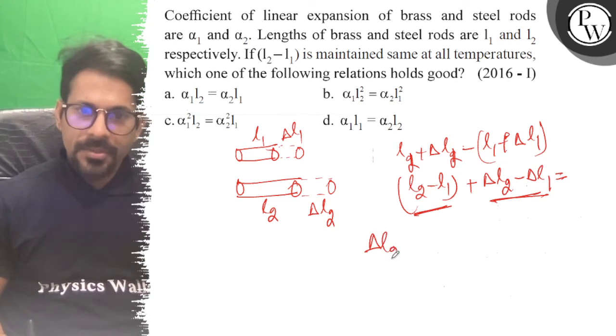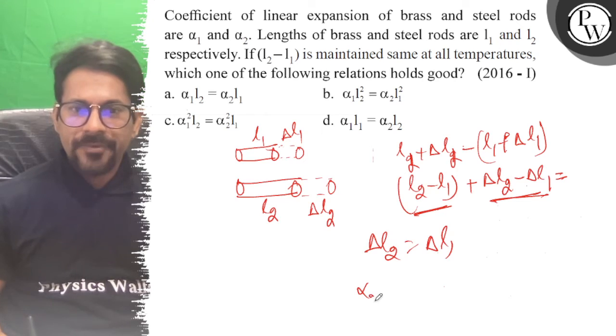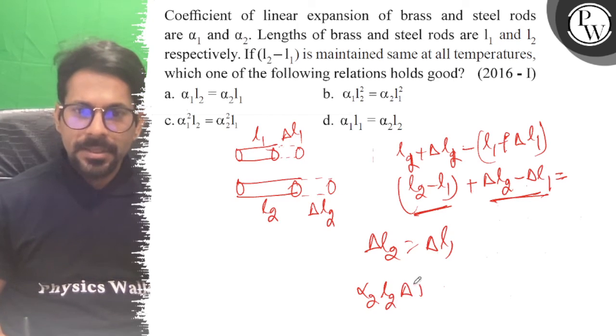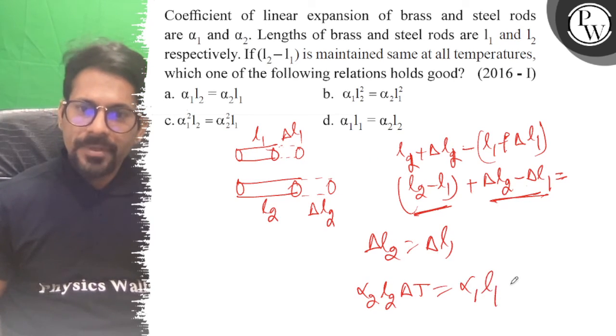So Δl₂ is equal to Δl₁. That means α₂·l₂·ΔT is equal to α₁·l₁·ΔT.